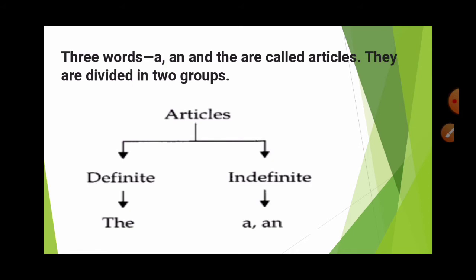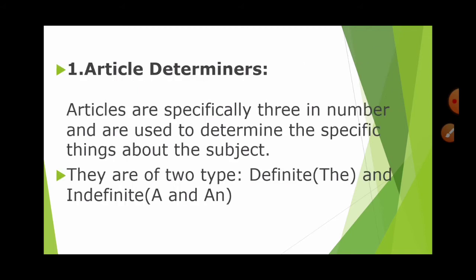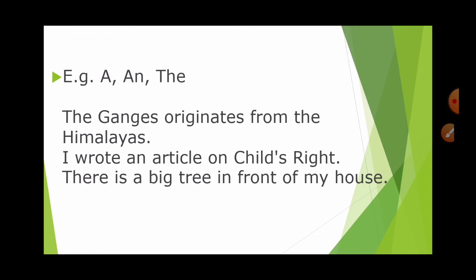Articles are: a, an, and the. They are divided into two groups: definite and indefinite. The definite article is 'the', which is used for something assured or specific. The indefinite articles are 'a' and 'an', used when quantity is not definite or countable.